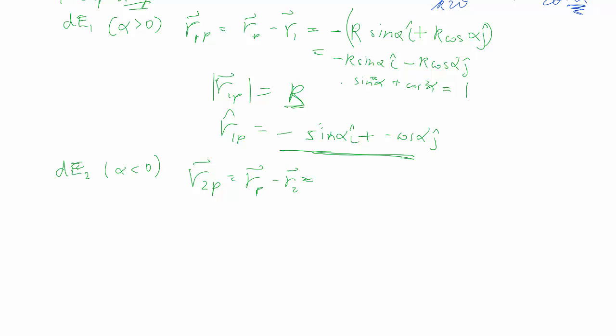R2 here is still positive sine alpha i plus cosine alpha j. You might be saying now, what the heck's happening? Because clearly that point should have a positional vector that is in the negative x.